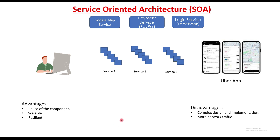But everything comes with a price. The biggest disadvantage of service oriented architecture is its complex design. If I have to create an application that talks to three different services, I have to create a channel between them so they can communicate — a synchronized messaging system. Also, because this kind of application communicates heavily over the network, the traffic will be very high. Service one, service two, and service three are all talking to each other, creating high network traffic.